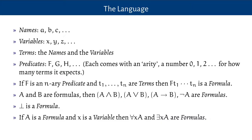Finally, if I've got a formula A and a variable x, then these two expressions — 'for all x, A' and 'for some x, A' — are formulas. These bind the variable x in the formula A: one binds it universally, the other binds it existentially. That's a bit technical, so let's see how it works by looking at some examples.